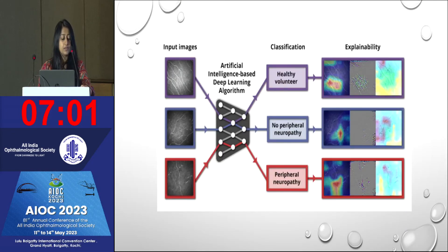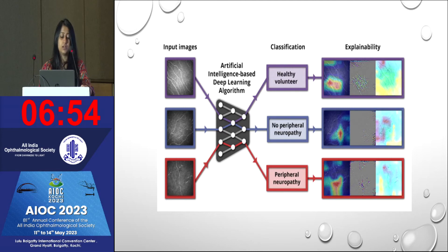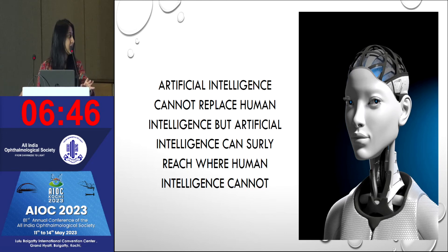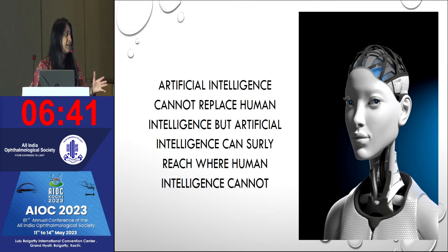The diabetic retinopathy component has also been very well assessed by artificial intelligence. All I can say is that artificial intelligence cannot really replace human intelligence, but artificial intelligence can surely reach where human intelligence cannot. Professor Natarajan has shown a very good example for the same. Thank you.